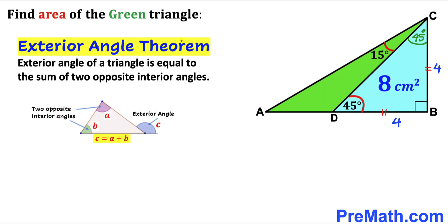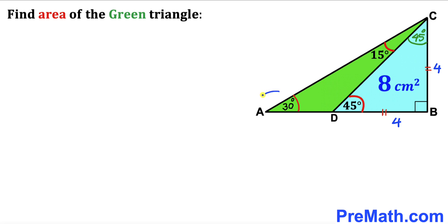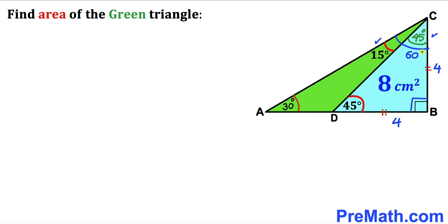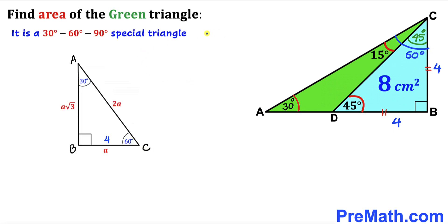Now let's recall the exterior angle theorem again: the exterior angle of a triangle equals the sum of two opposite interior angles. Here we can see that 45 degrees is our exterior angle, whereas 15 degrees and this unknown angle are the opposite interior angles. So if this angle is 15 degrees, this angle DAC has got to be 30 degrees. We know this angle is 90 degrees, and this angle is 15 plus 45, making 60 degrees. So triangle ABC is a 30-60-90 special triangle.